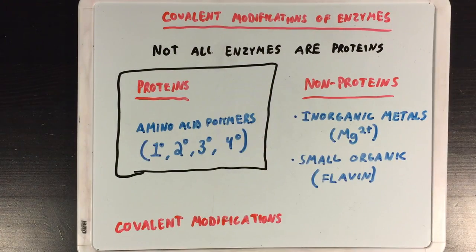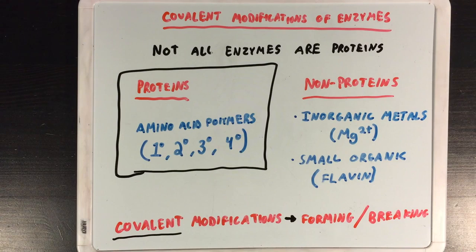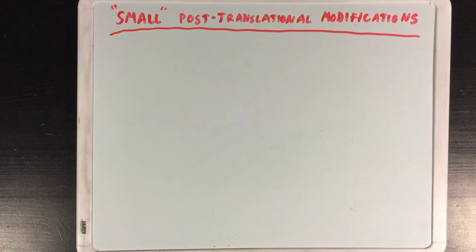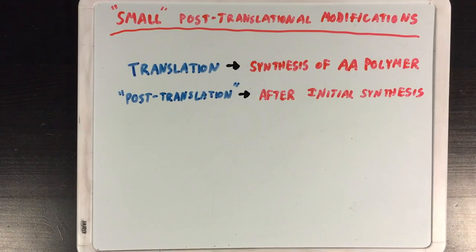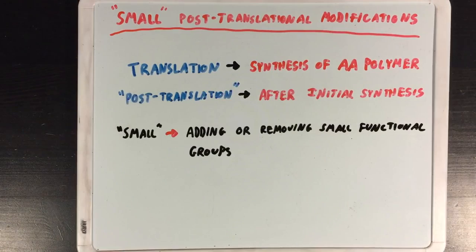To be clear, when we say covalent modifications, we refer to modifications to a protein that involve forming or breaking covalent bonds. Now, there are tons of different covalent modifications that we can observe, so I'm only going to touch on a select few. The first category I want to talk about are small post-translational modifications. Post-translation refers to events that take place after the initial synthesis of amino acid polymers. When I say small, I'm referring to modifications that involve small functional groups being added or removed from an enzyme — and there are many types, but I'll touch on three.